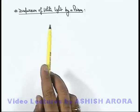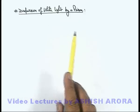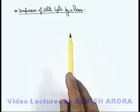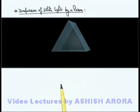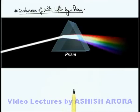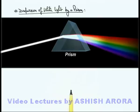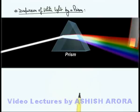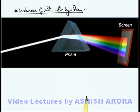Let us now study the dispersion of white light by a prism — this you might have studied in your early classes also. Here you can see a realistic situation in which, when a white light beam is incident on a prism, due to refraction at the 2 surfaces of the prism, it will split at different angles and into various colors. Finally, it will be a diverging beam of various colors, which when allowed to fall on a white screen, a bright spectrum of various colorful bands is obtained, as we can see here.